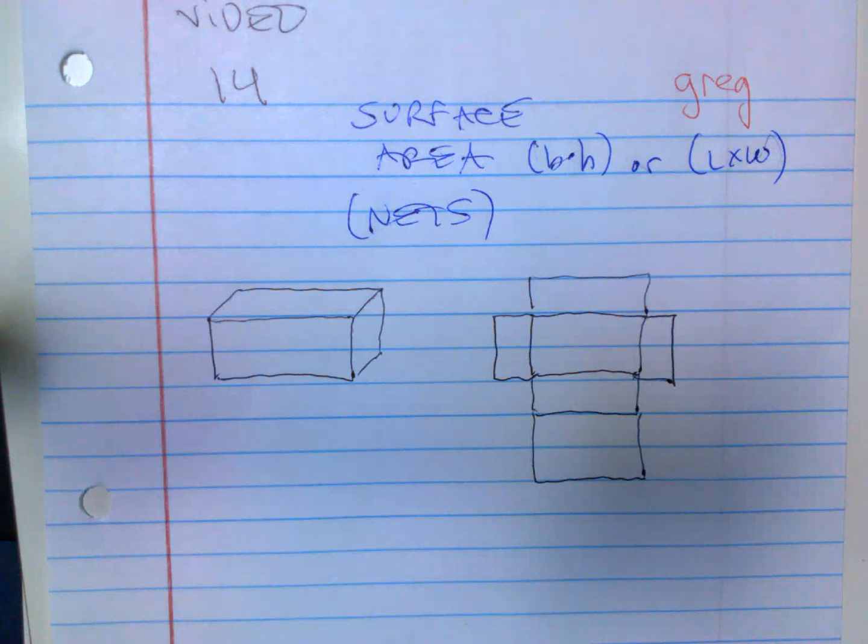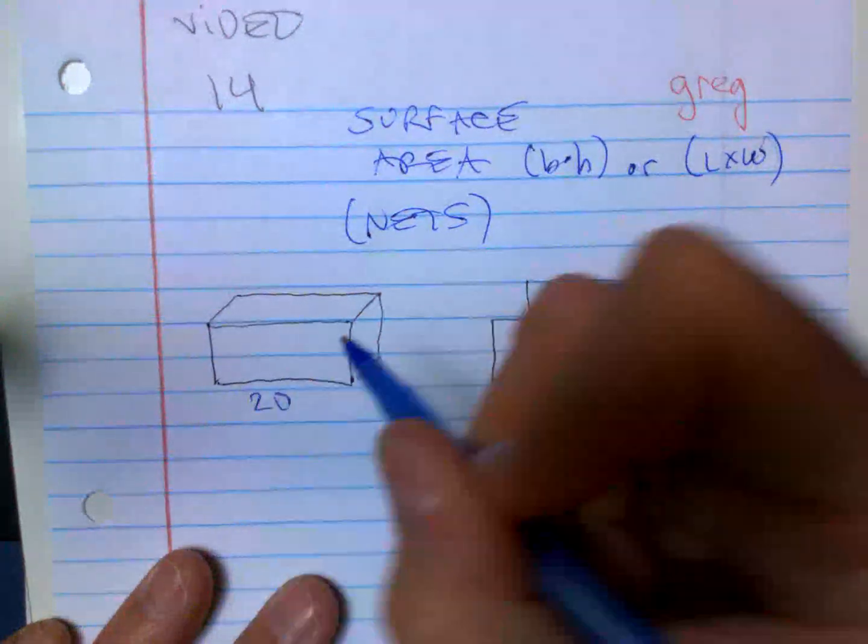Basically just like a dice that you roll, there's six sides. Any 3D objects like a cereal box, a Kleenex box that are rectangular or square is going to have six sides. So you could find the area of each side, but here's another way to do it.